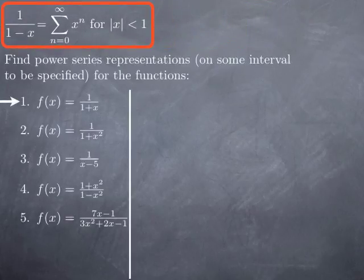So let's say we want to find power series representations, and each time we're going to have to also find the interval on which the power series representation is valid, for these five functions, starting with 1 over 1 plus x. Well, you see that what we have is: if you have 1 over 1 minus x, it's the sum of the geometric series of common ratio x and first term 1.